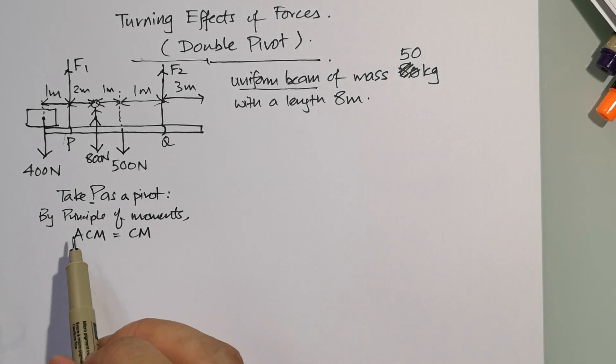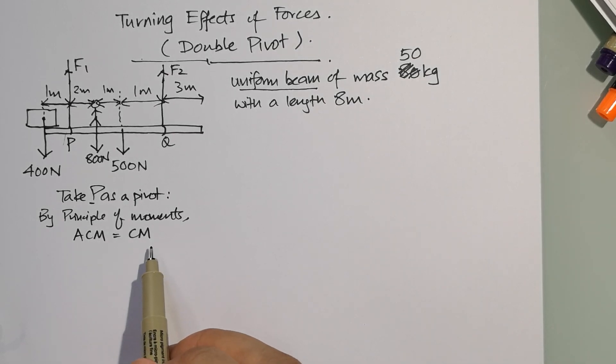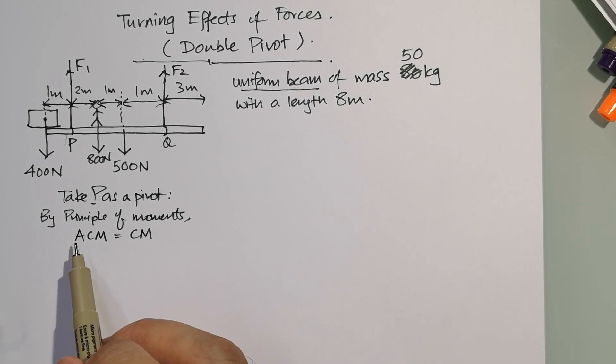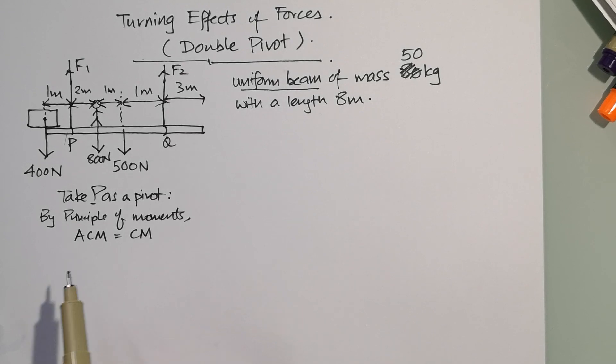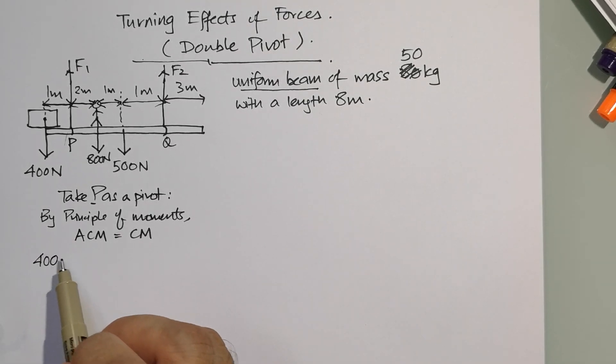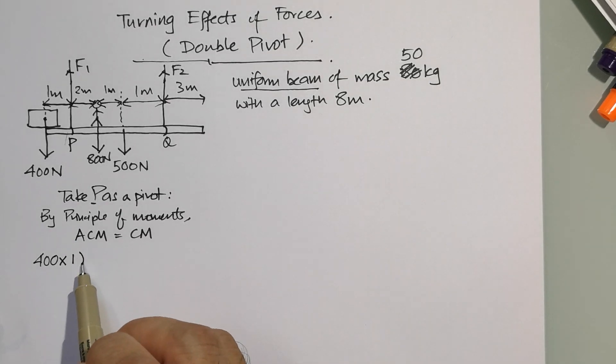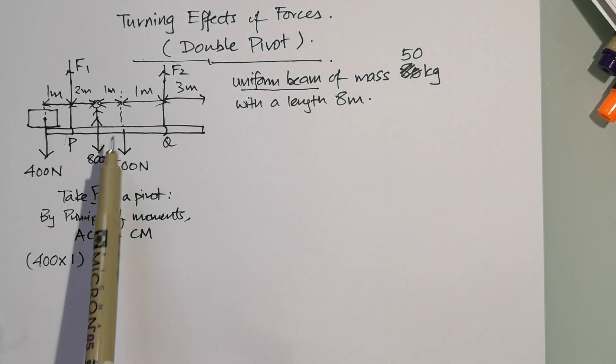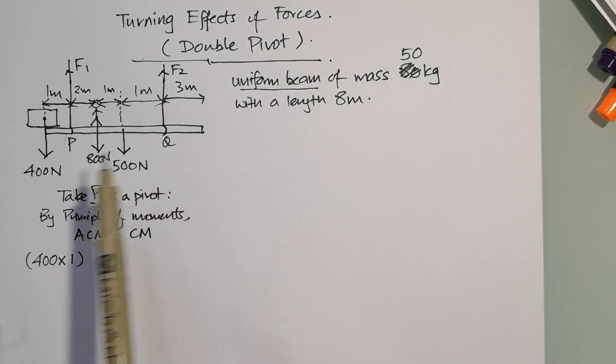You need to write this statement: anti-clockwise moments equals clockwise moments. Let's consider all the anti-clockwise moments with respect to point P as a pivot. This will be 400 times 1 because the distance is from the force to the pivot. What other anti-clockwise moments are there? This is anti-clockwise, so F2 is anti-clockwise.